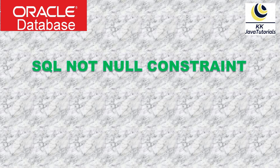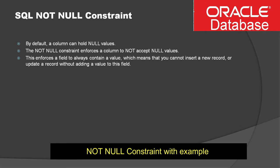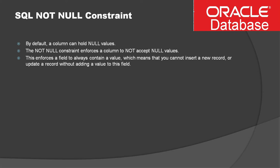In this Java tutorial, we'll talk about SQL NOT NULL constraints. By default, a column can hold null values. If you want a column to not hold null values, you can define a NOT NULL constraint at the column level. This enforces a field to always contain a value, which means you cannot insert a new record or update a record without adding a value to this field.